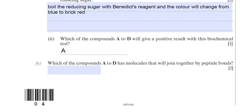Part C asks which of the compounds A to D has molecules that will join together by peptide bonds. Anything related to peptide bonds means protein, and the building blocks that make up a protein — joined by peptide bonds — are amino acids. The amino acid identified earlier is compound C.